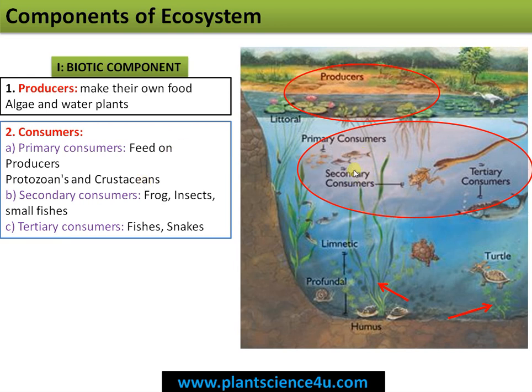Next come consumers. Consumers can be divided into primary consumers that directly feed on the producers, like protozoans and crustaceans; secondary consumers that feed on the primary consumers, like frogs and insects; and also tertiary consumers, or the top carnivores, that include fishes, snakes, etc.